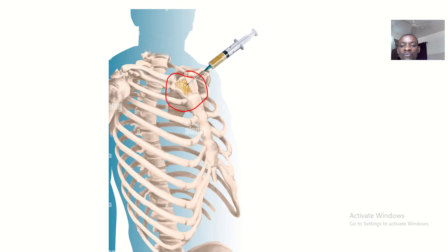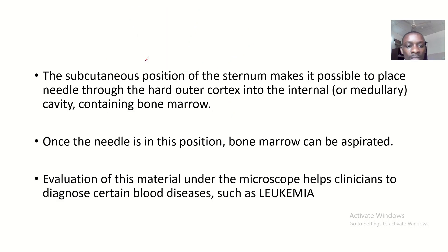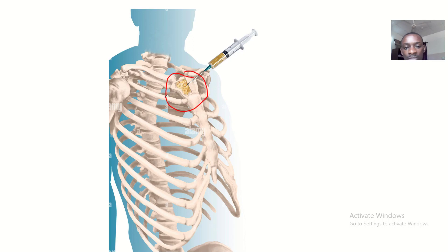This is basically a collection of bone marrow from the sternum, and it is done because the sternum is a subcutaneous bone — it is easily accessible, just below the skin. The subcutaneous position of the sternum makes it possible to place a needle through the outer cortex into the internal or medullary cavity, which contains the bone marrow.